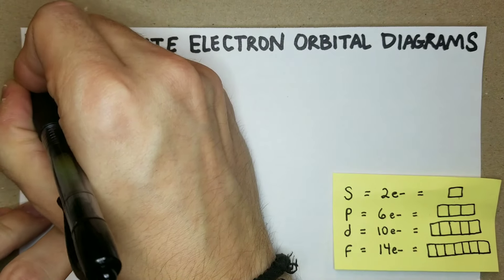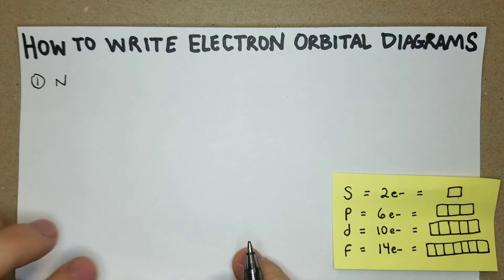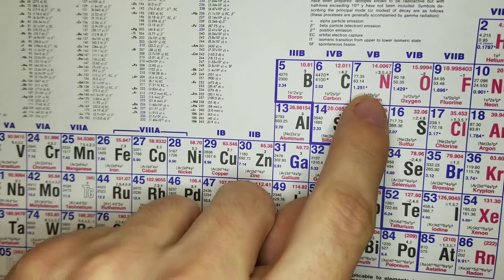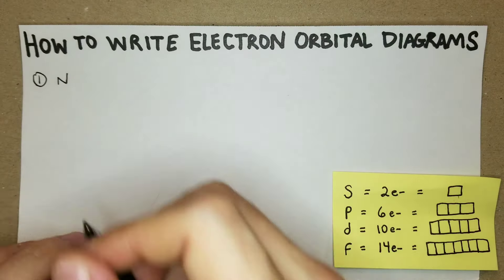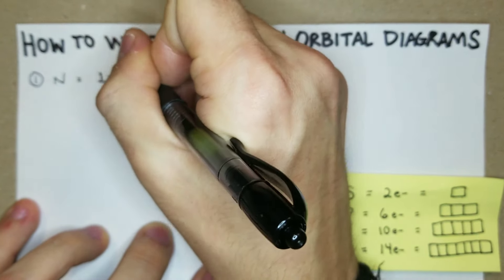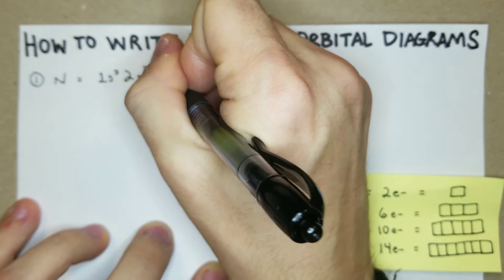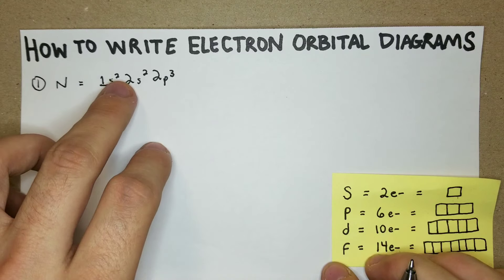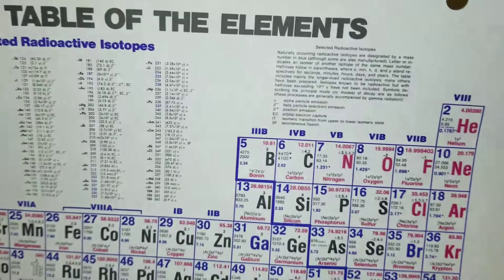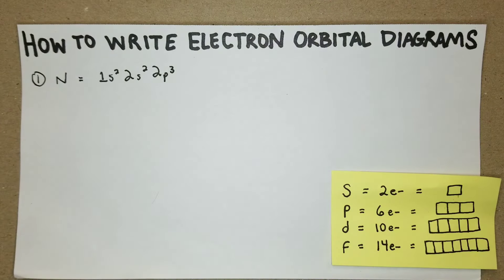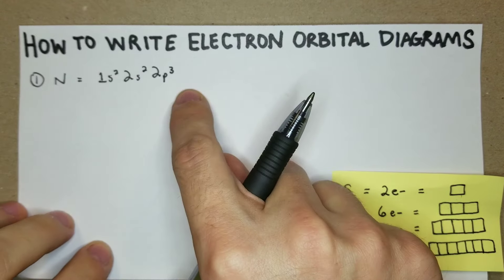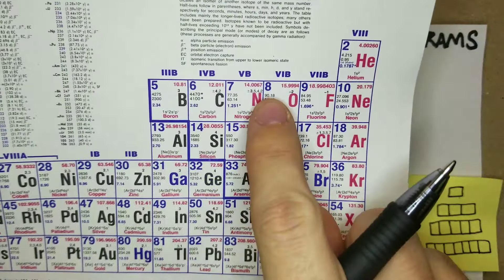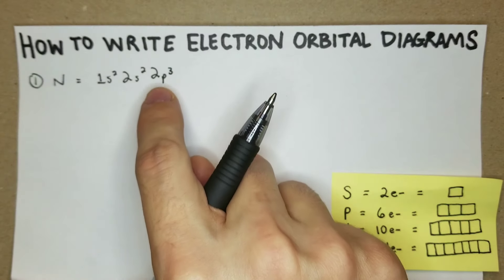First we'll start with a straightforward one — nitrogen. We can do it on the periodic table and move from there. Nitrogen is right here, so we're going to be in the first p orbital. Nitrogen is going to be 1s² 2s² 2p³. One way is to count up: 2, 4, 5, 6, 7 — and the atomic number of nitrogen is 7. Another way is to note that nitrogen ends in the p orbital and it's the third one in, so it's 2p³, then just work back up to that.